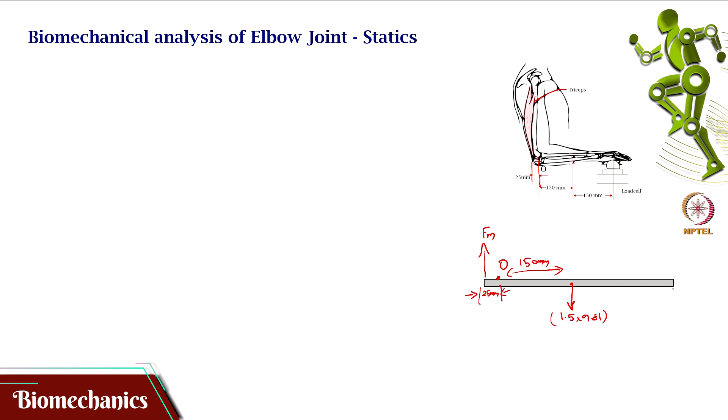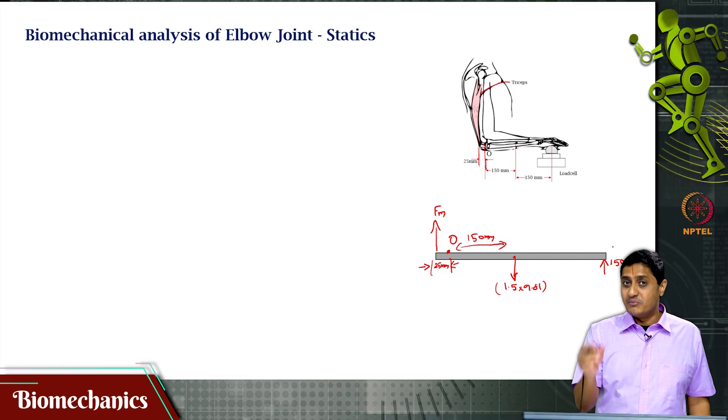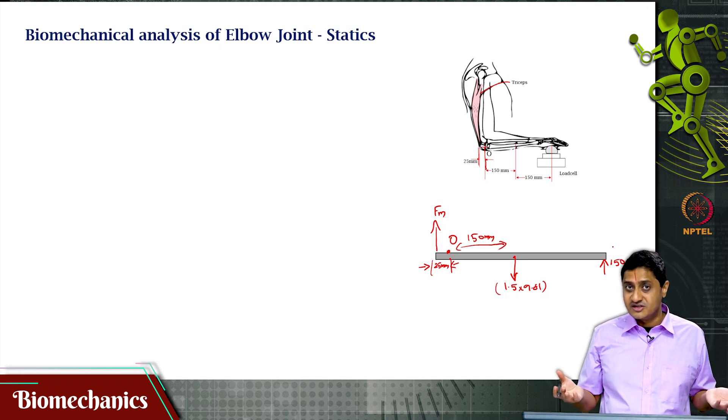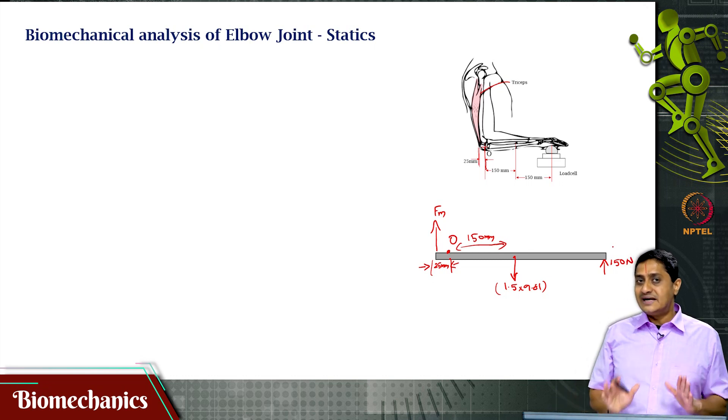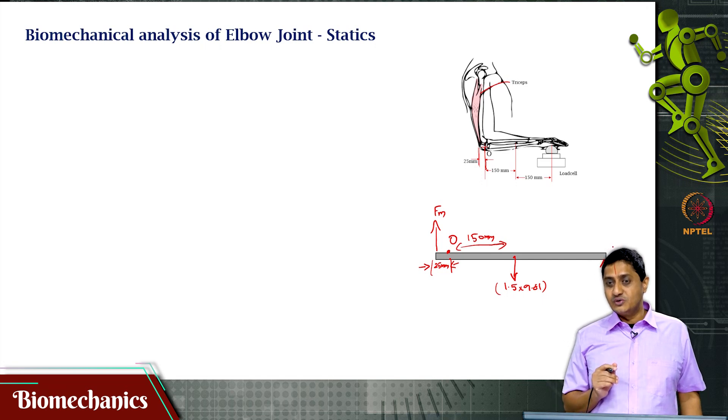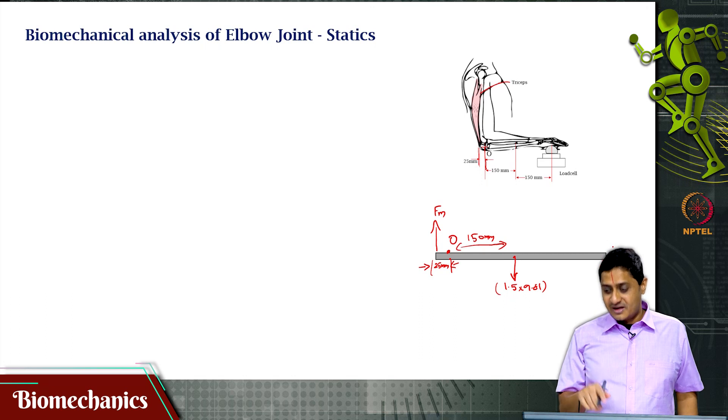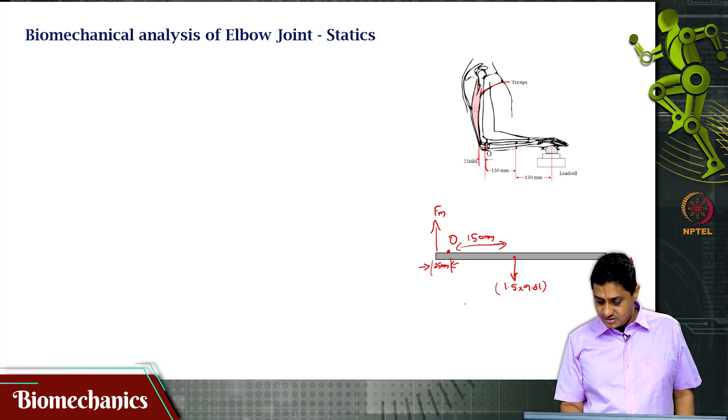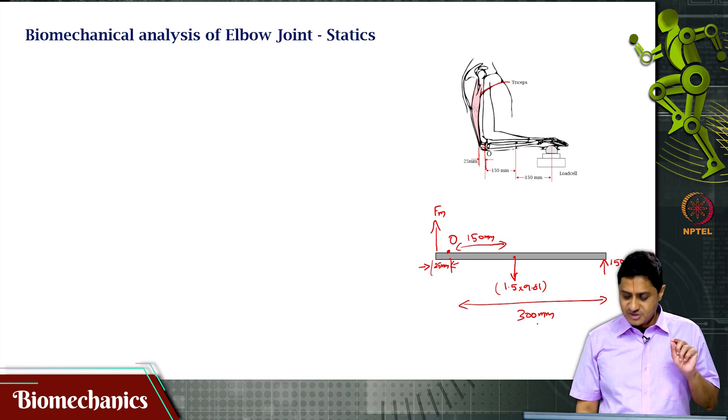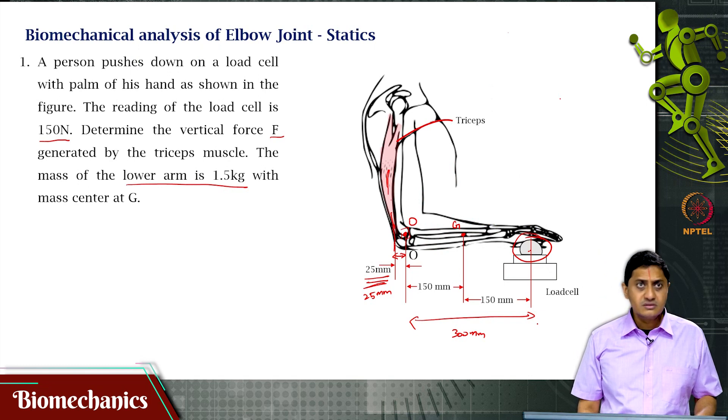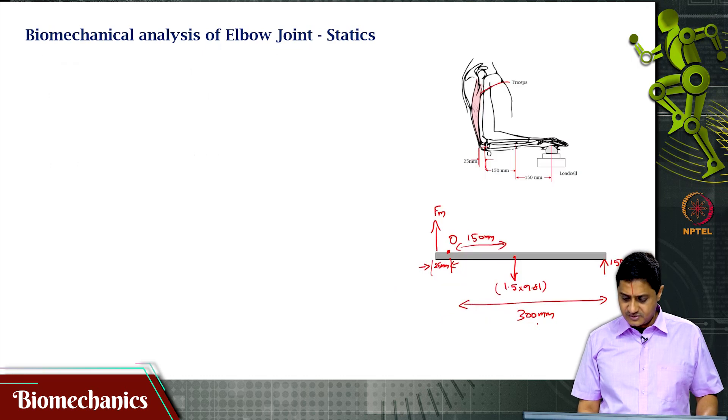The force applied by the person is 150 newtons, but since the load cell is not going down, it is probably kept up on a sturdy table. That means that the load cell itself is applying a force of 150 newtons. Remember, I am drawing a free body diagram of the arm system, not of the load cell. I know that this load cell is applying a reaction force of 150 newton on the arm and that is happening at a distance of 300 mm from the joint.